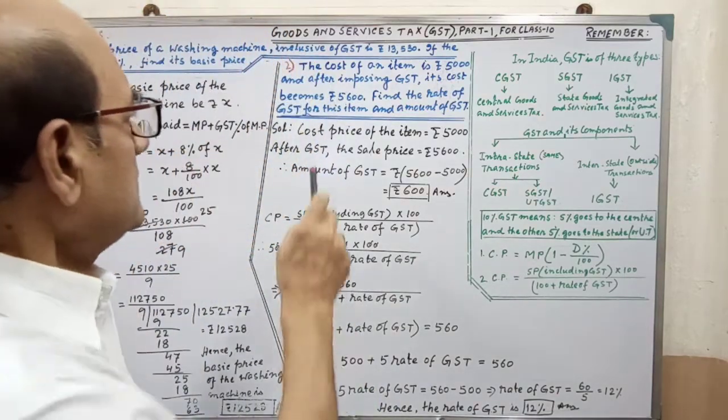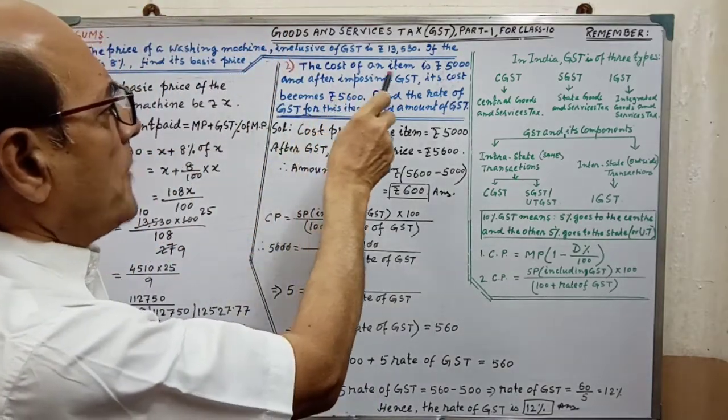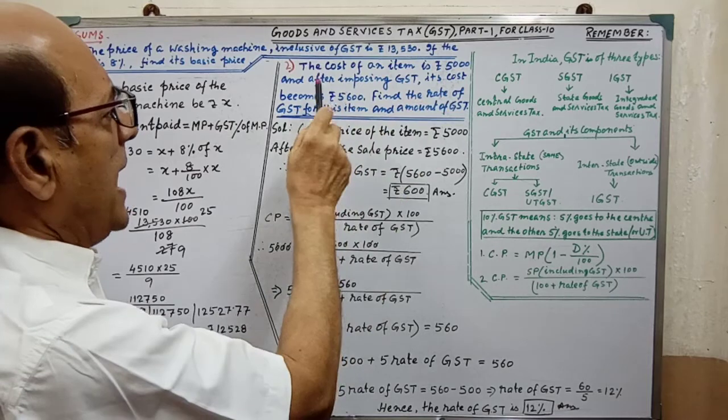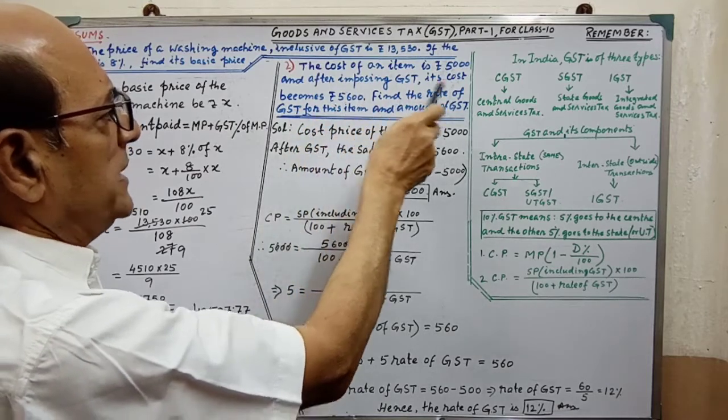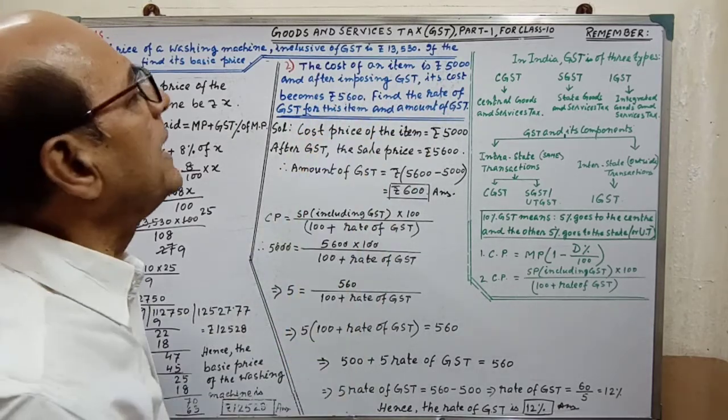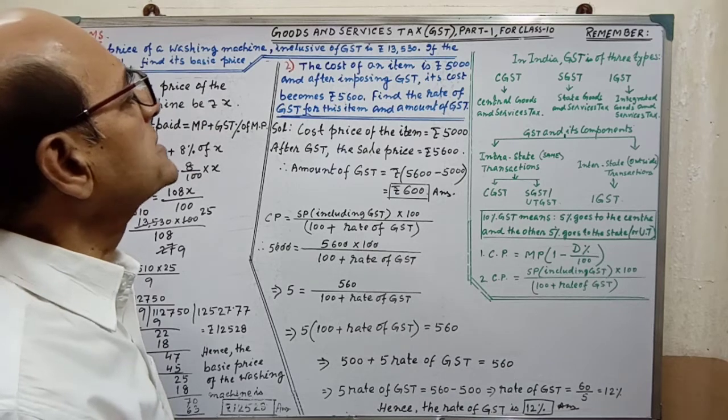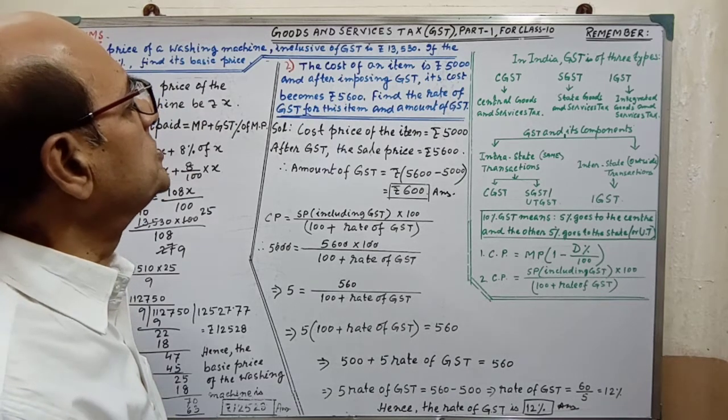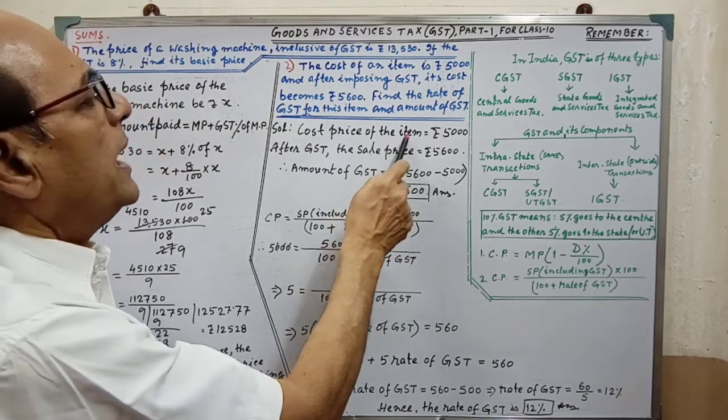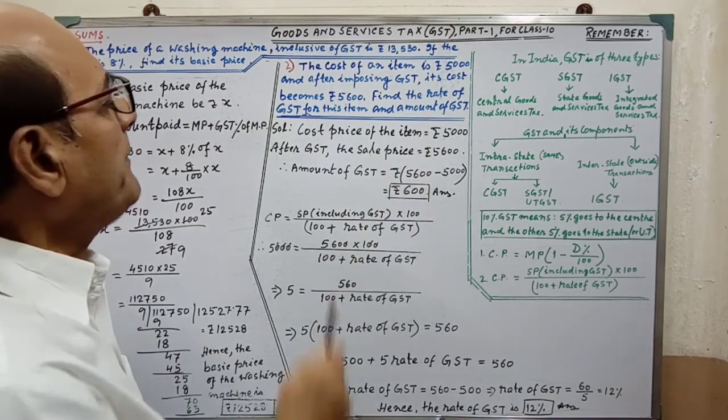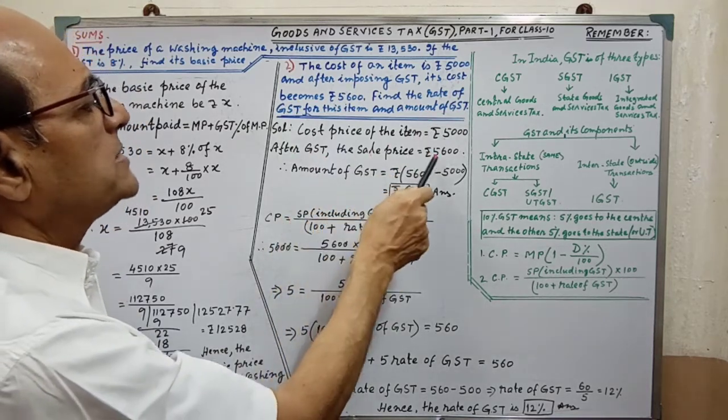Next sum. The cost of an item is Rs. 5,000 and after imposing GST its cost becomes 5,600. Find the rate of GST for this item and the amount of GST. After GST the sale price is this.